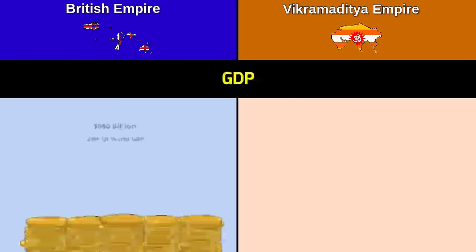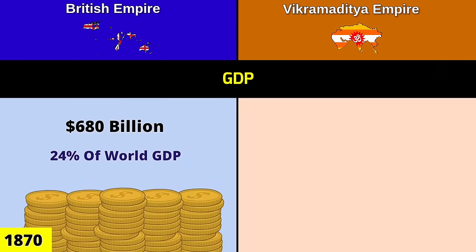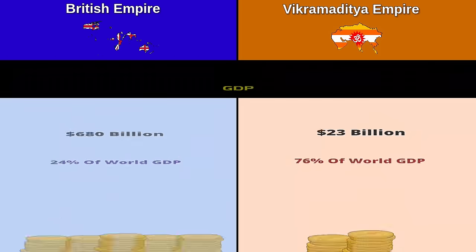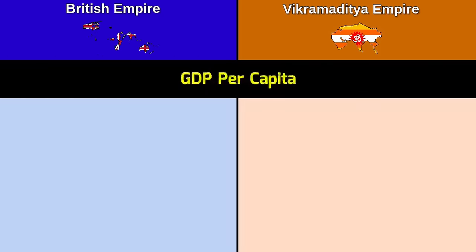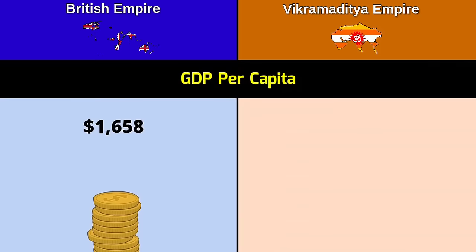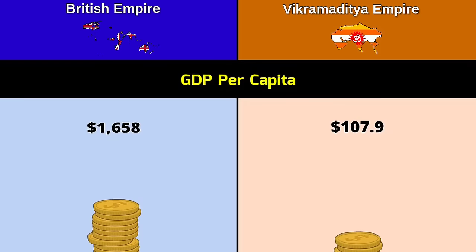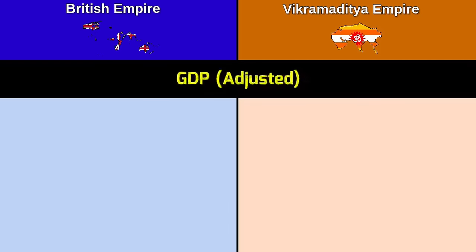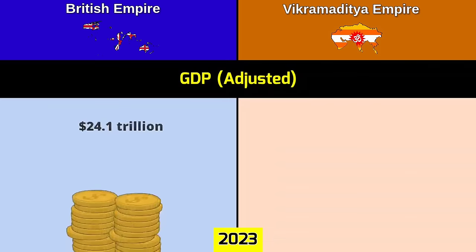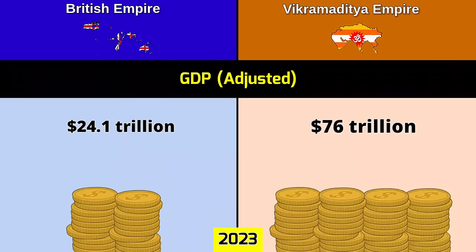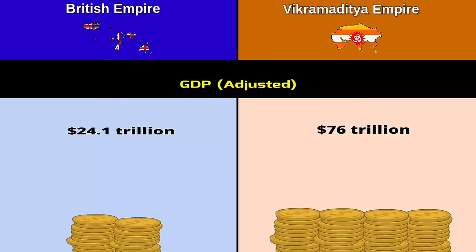GDP: British Empire — 680 billion dollars; Vikramaditya Empire — 23 billion dollars. GDP per capita: British Empire — 1,658 dollars; Vikramaditya Empire — nearly 108 dollars. GDP adjusted value: British Empire — 24.1 trillion dollars; Vikramaditya Empire — 76 trillion dollars.